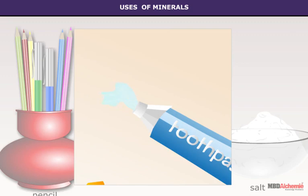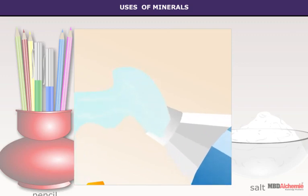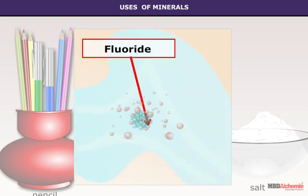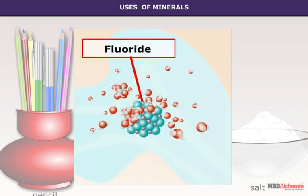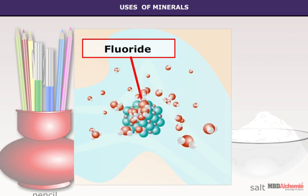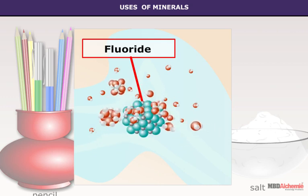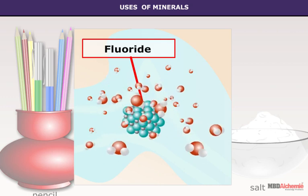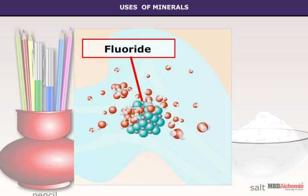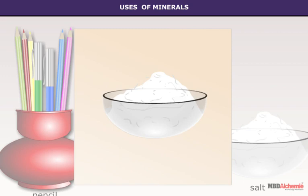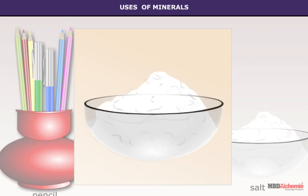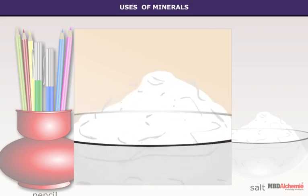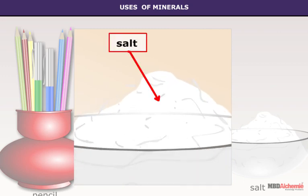The toothpaste we use to clean our teeth contains a mineral called fluoride. Many other minerals are also used, like mica, which adds sparkle to the teeth. Salt is a mineral obtained through evaporation of sea water.